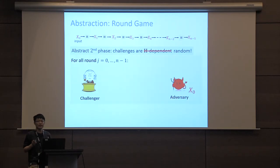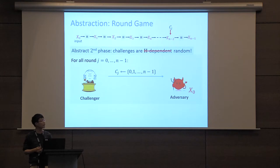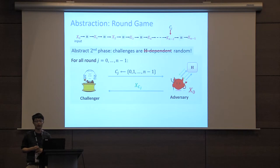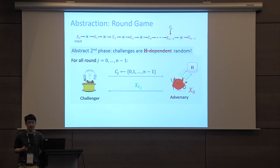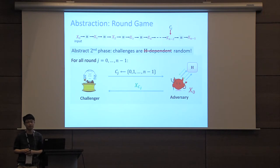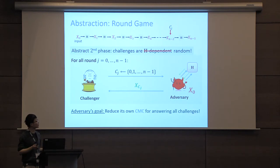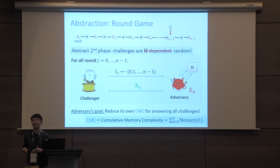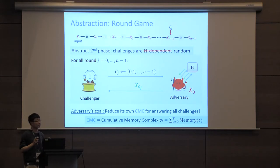The round game consists of n rounds. In each round j, the challenger generates and reveals a uniformly random challenge Cj, and the adversary is required to respond with x_{Cj}. If the answer is correct, the challenger initiates the next round. The game terminates after all challenges have been successfully answered. The adversary's goal is to reduce its own CMC to answer all challenges. Let me give some intuition about simple strategies the adversary may use.